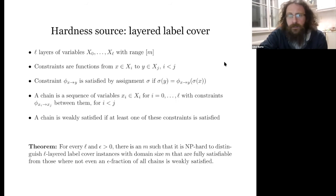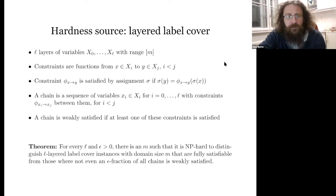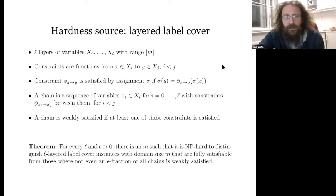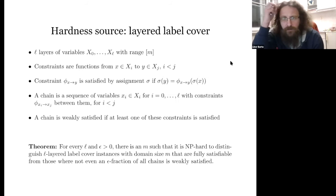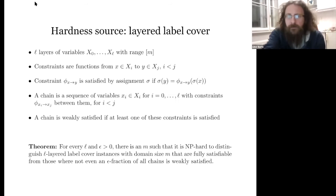An audience member asks whether for a chain, the composition of phi from x0 to x2 must equal the composition of phi from x0 to x1 and phi from x1 to x2 — i.e., whether these phi's can be arbitrary. The speaker acknowledges this is a good point and says they need to think about it further.